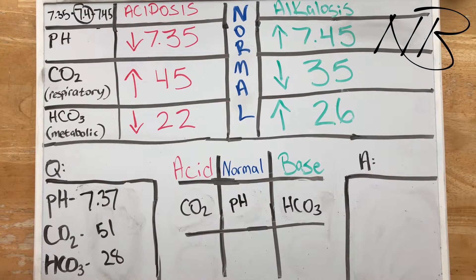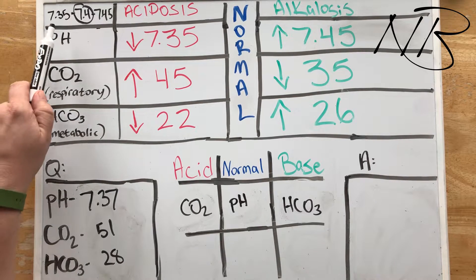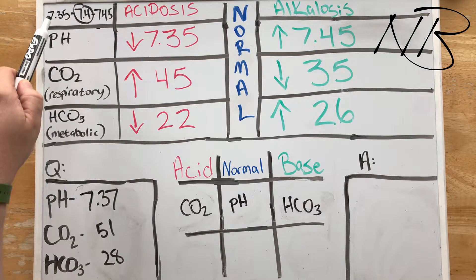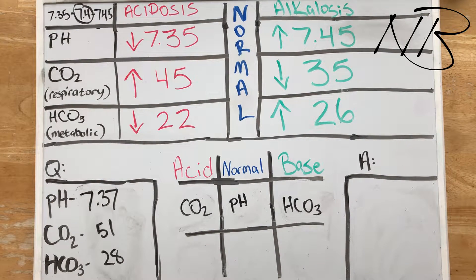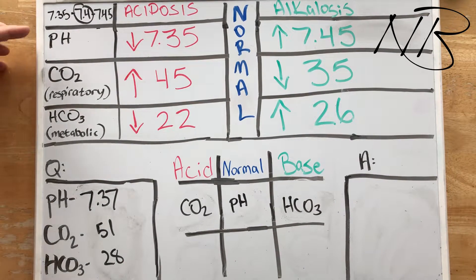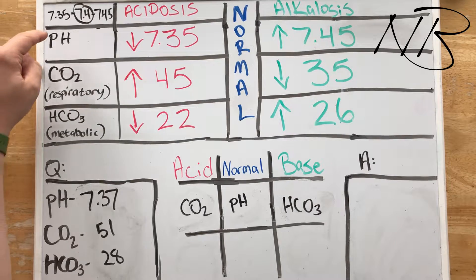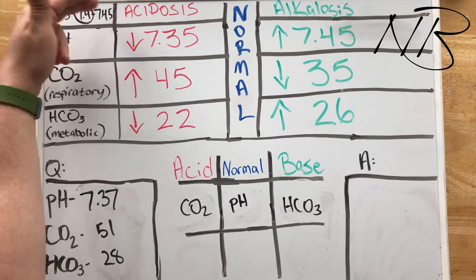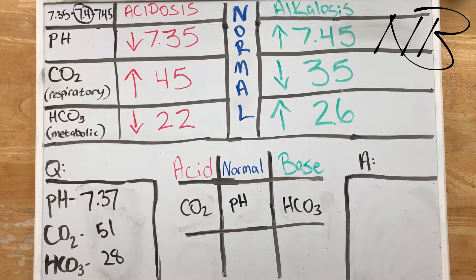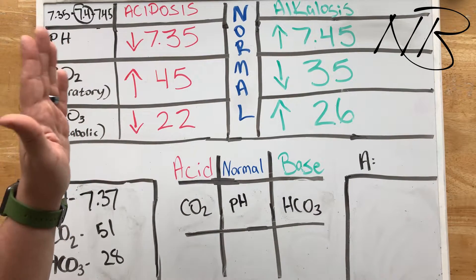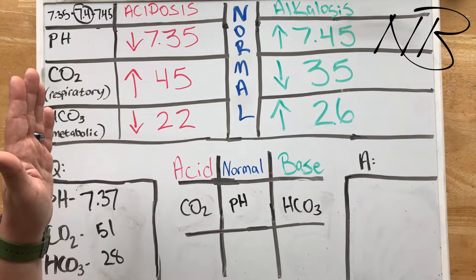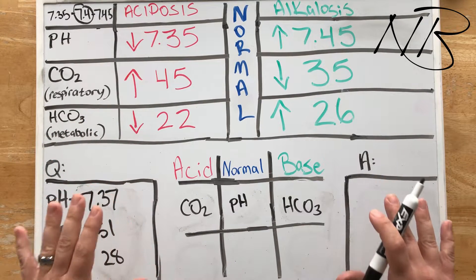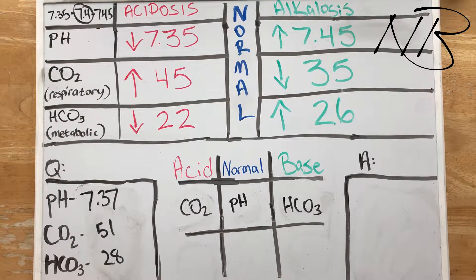What I want to do is draw your attention to this top left corner — I've just added this in. What we know is that a normal blood pH is 7.35 to 7.45, with the dead middle being 7.4. That's how you look at all of these fully compensated ABG questions — you look at that pH.